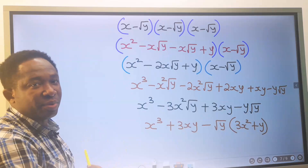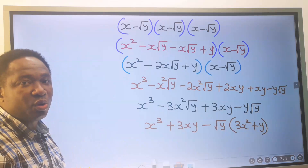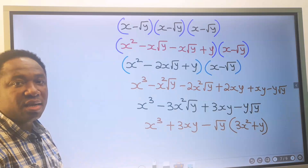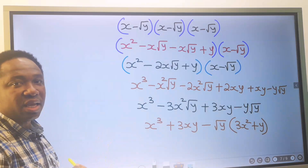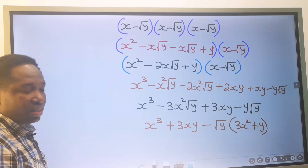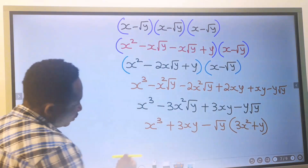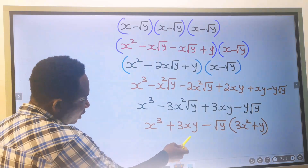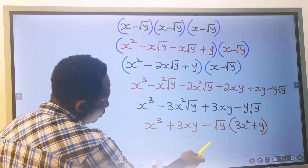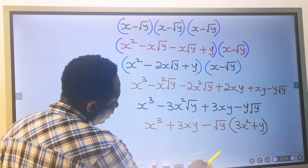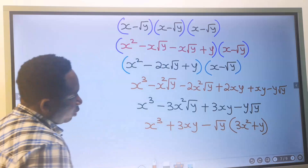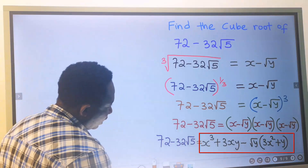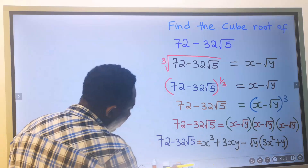We have done this in the previous video, to be able to solve the cubic root of a binomial quadratic surd. Learning how to expand this is very important. I will take this result, which is x to the power of 3 plus 3xy minus the square root of y, multiplied by 3x squared plus y. I will bring the result here and equate everything to this.